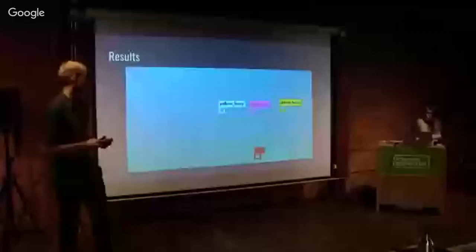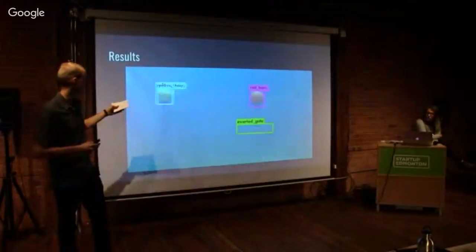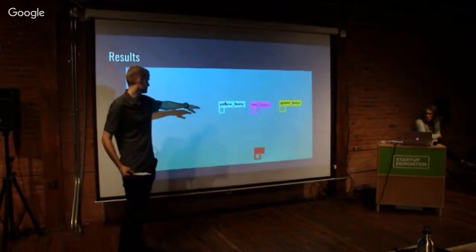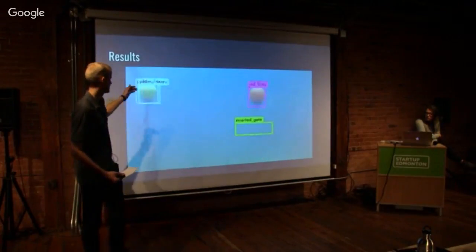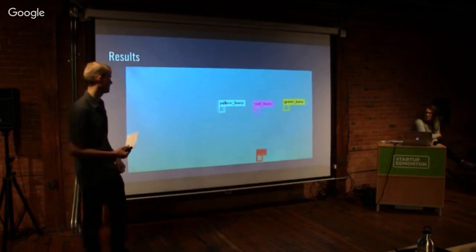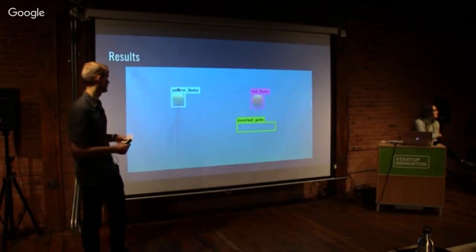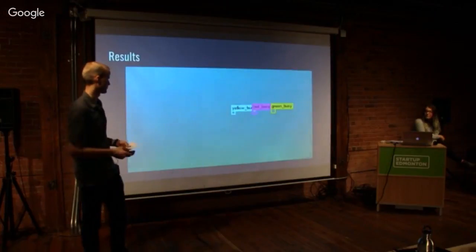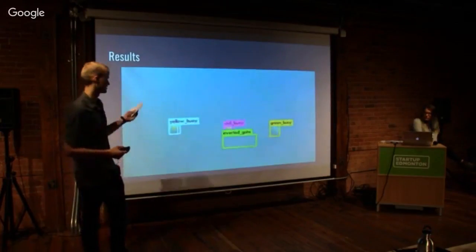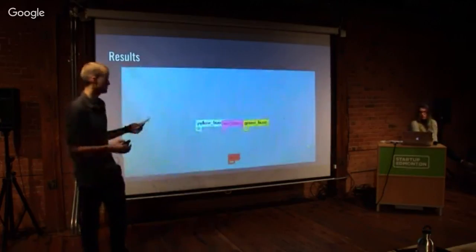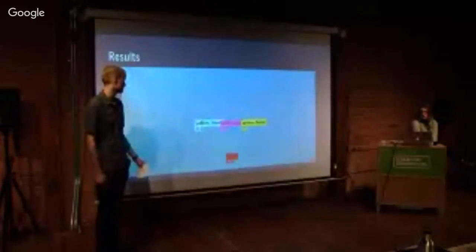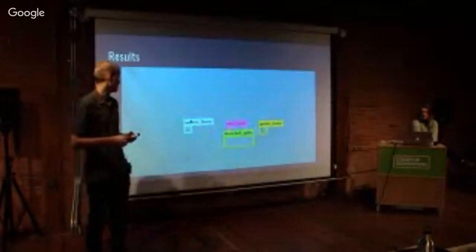For the results, running the model on the test set, even from a distance it's able to detect the buoys and correctly identify their colors. I can hardly tell the difference between the red and yellow buoys at that distance, and the green buoy is barely visible to me, yet the model gets it. It's also detecting the inverted gate and the path. We were pretty happy with these results. In another portion of the test set with similar water conditions, the model is still doing well and handling the caustics on the buoys with no problems.